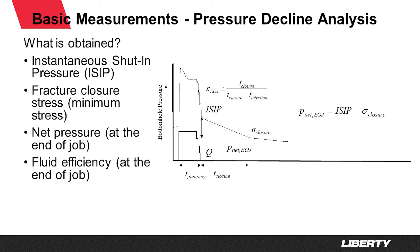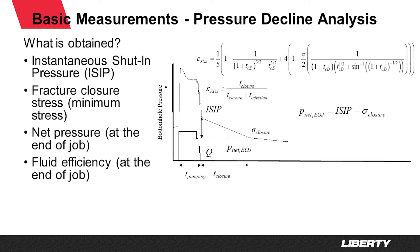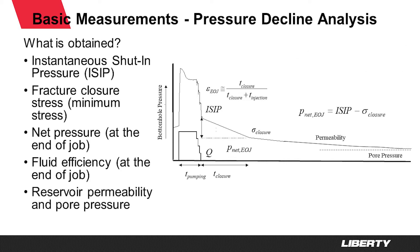Fluid efficiency can be determined in a slightly different way using the same closure point. For a very simplistic equation, the end-of-job slurry efficiency is roughly equal to the total time it takes for the fracture to close after the ISIP has been measured, divided by the time it takes to pump plus the time for the fracture to close. With this simple pressure decline data analysis, we can determine two parameters that are vital for pressure history matching and pressure analysis: slurry efficiency and net pressure. These two parameters, like no other, can give us constraints for fracture width, length, and height that can then be used in more sophisticated models.